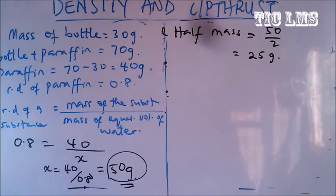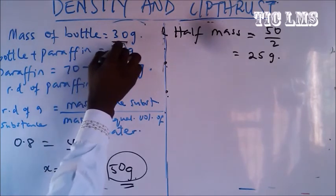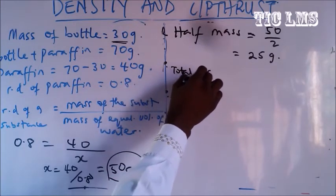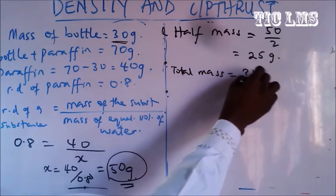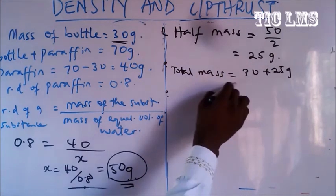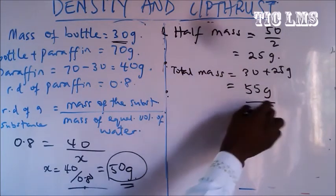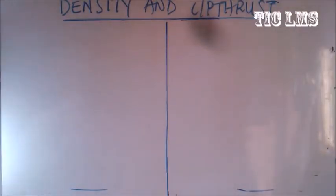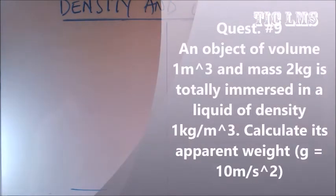The mass of an equal volume of water is 50 grams. So when the bottle is filled with water, the total mass equals mass of bottle plus mass of water, which is 30 plus 50 equals 55 grams. Wait — the question asks when filled with water, so the answer is 55 grams.